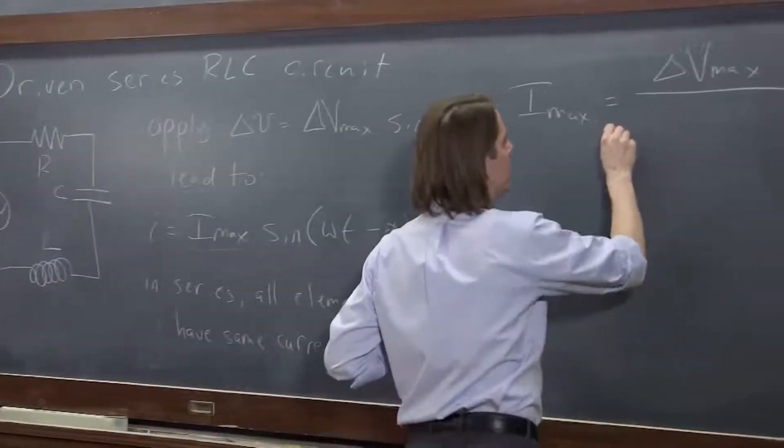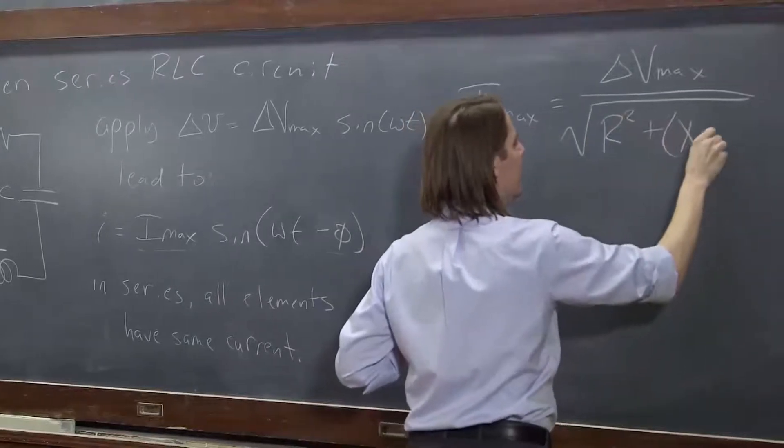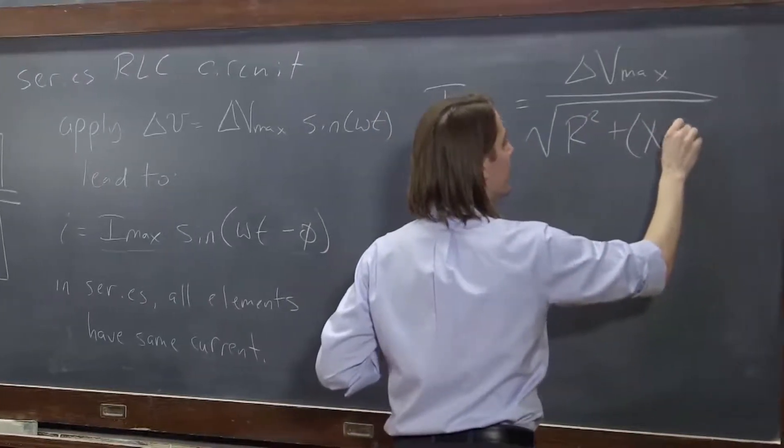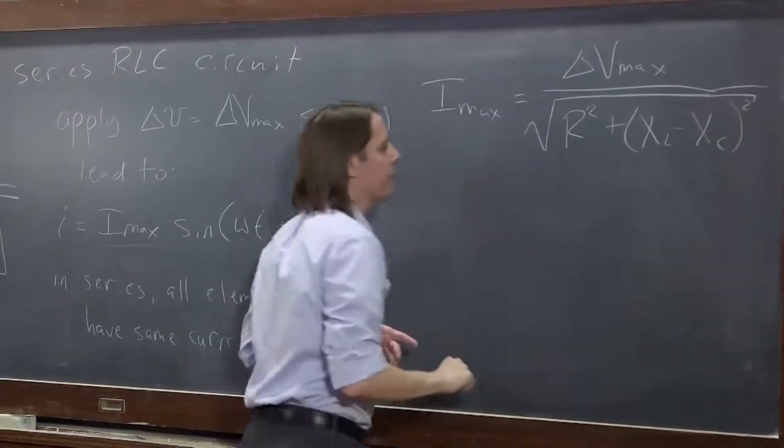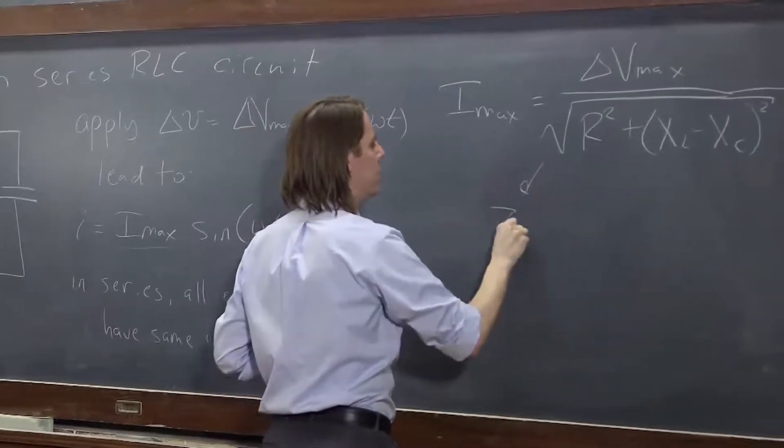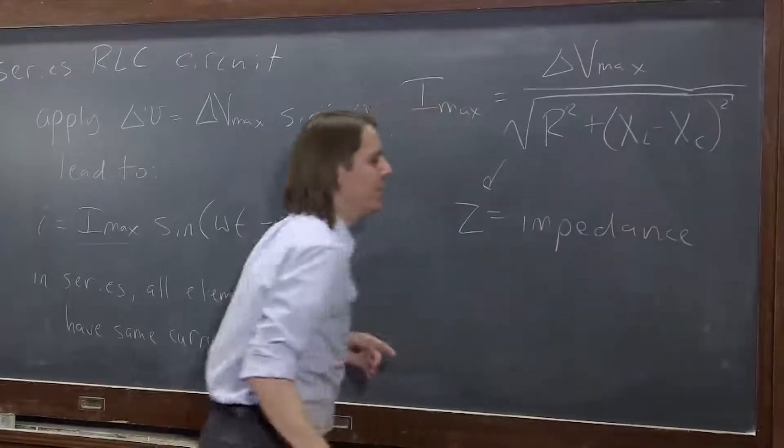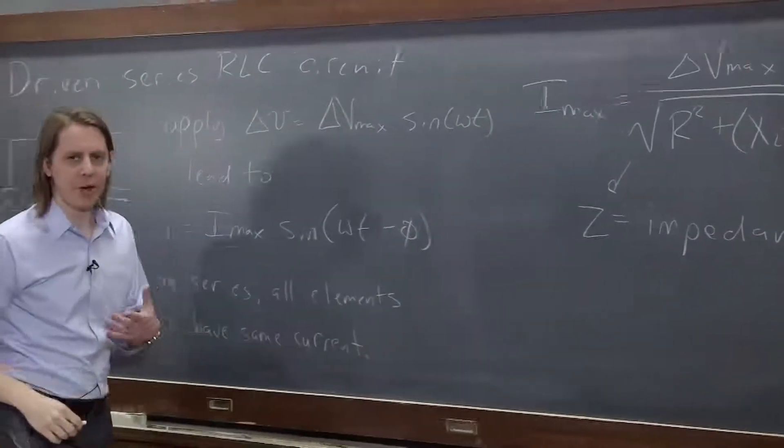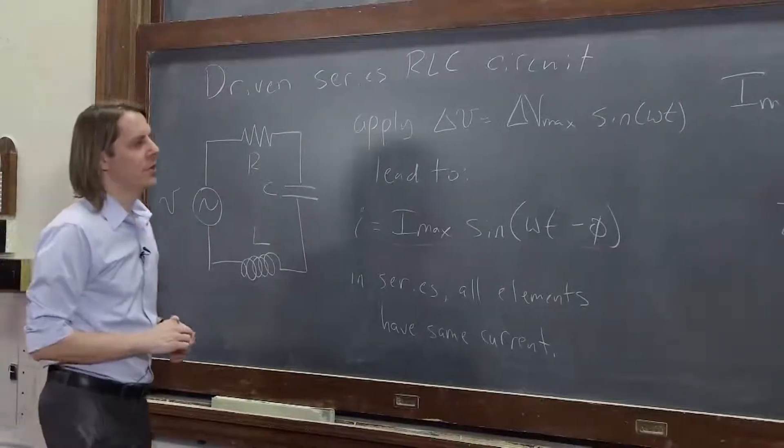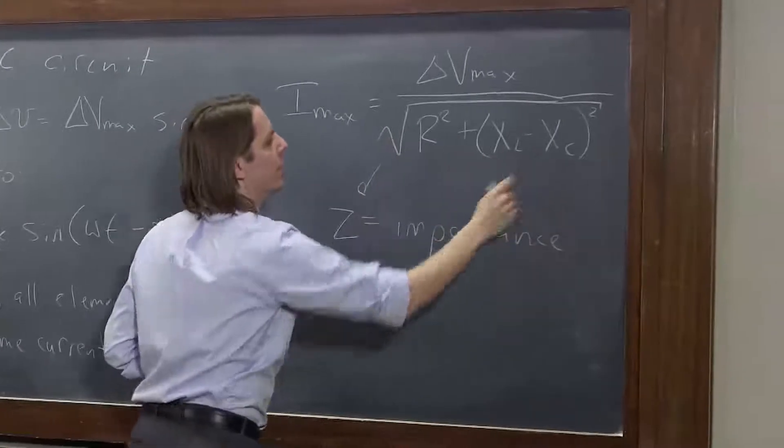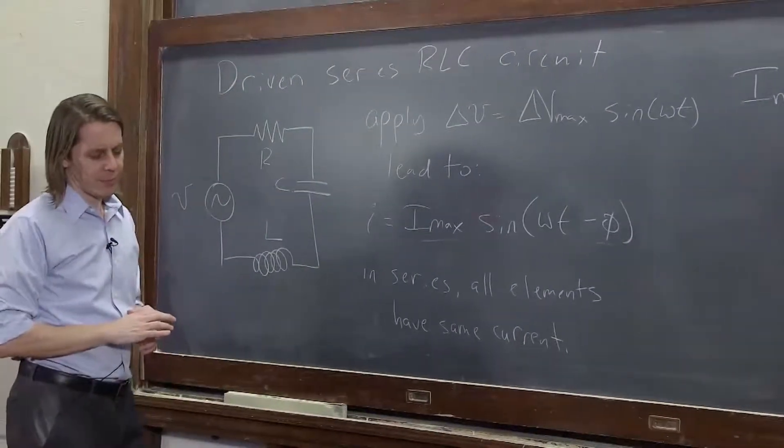It's the square root of R squared plus XL, the inductive reactance, minus the capacitive reactance squared. And this, all together, is called the impedance of the circuit. The impedance is kind of like the generalized AC resistance that you would just think about in a normal DC circuit. So that's how you combine the three elements, or that's how you combine their resistances and reactances.